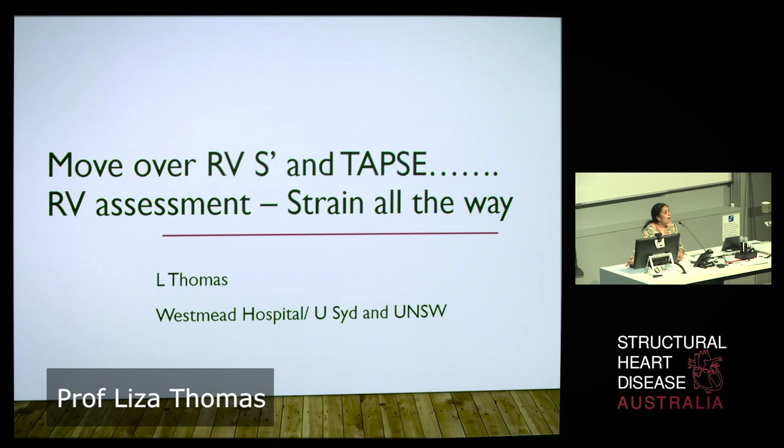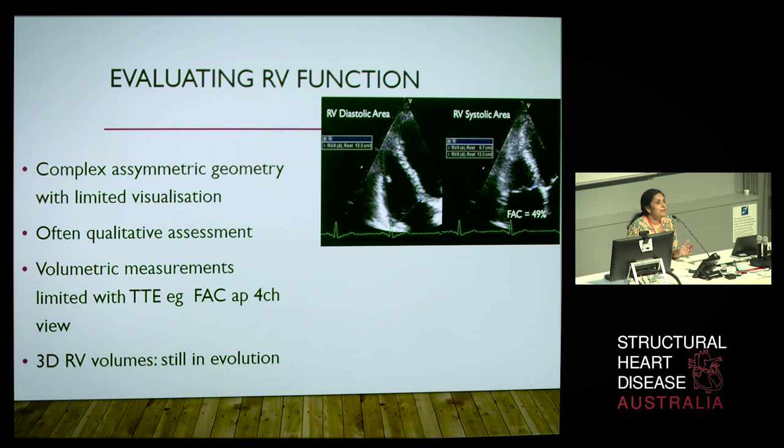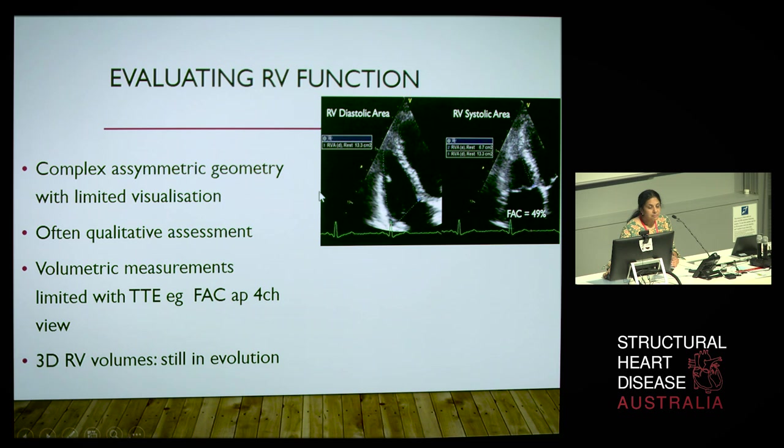We're going to talk about RV strain. In terms of evaluating the right ventricle, it's now viewed as something important. We previously focused on the left ventricle, and it was often just an eyeball check to say the RV looks all right. We can use two-dimensional measurements and measure fractional area change.